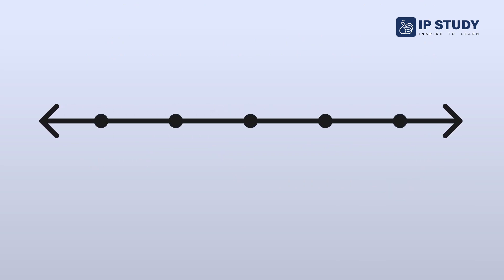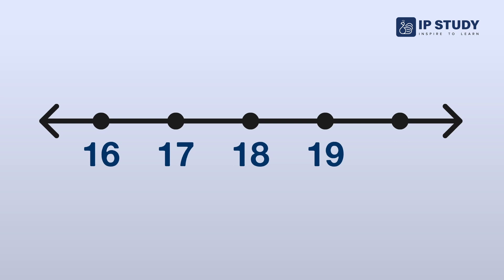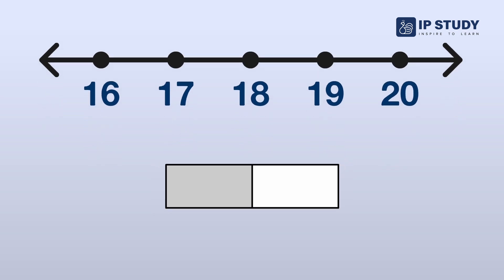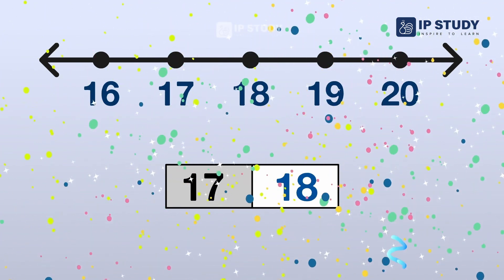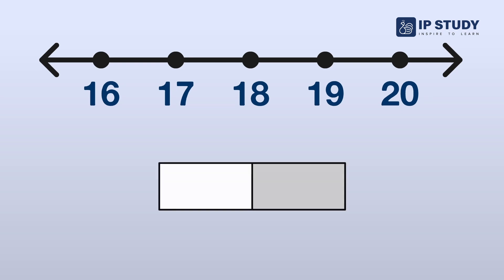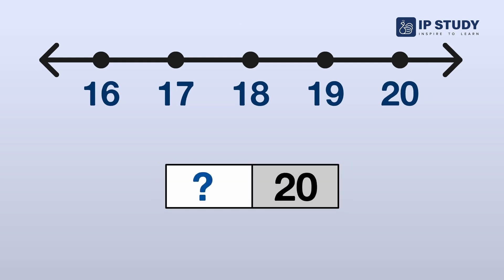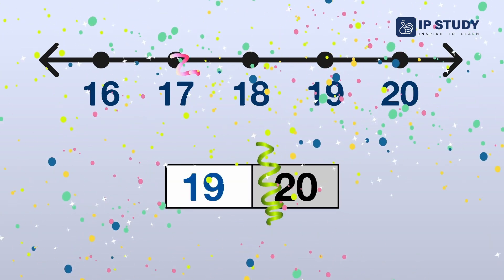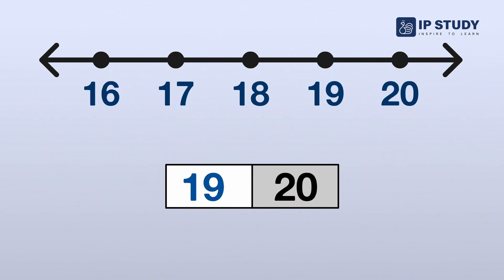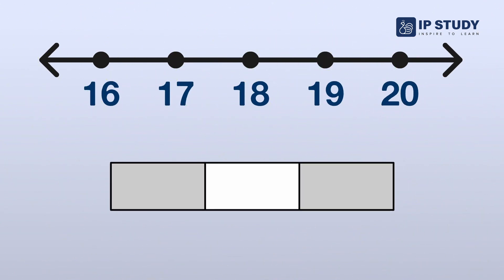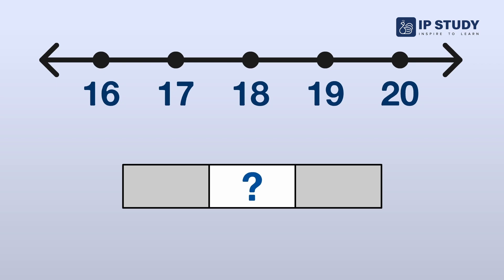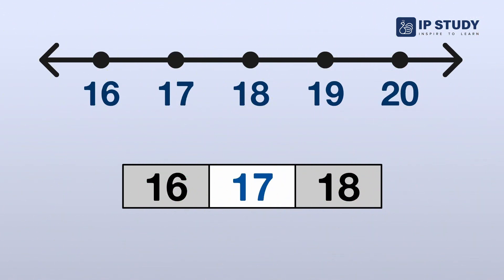Look at these numbers: 16, 17, 18, 19, 20. Now can you tell me which number comes after 17? That's right — 18. Now can you tell me which number comes before 20? That's right — 19. Now can you tell me which number is between 16 and 18? That's right — 17.